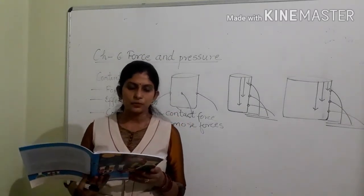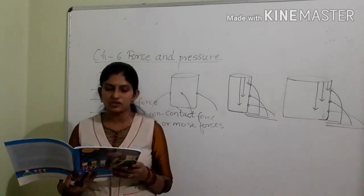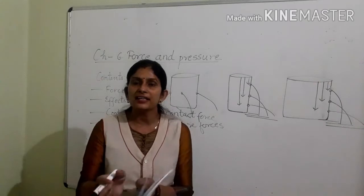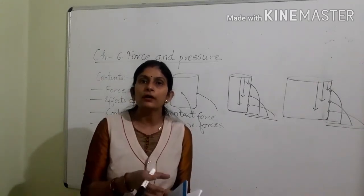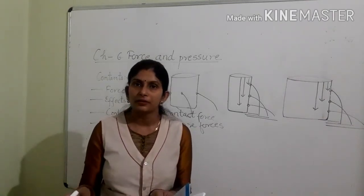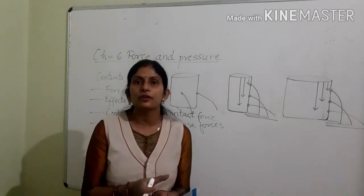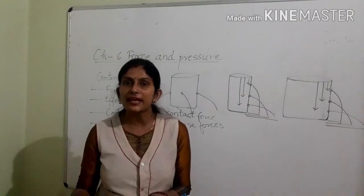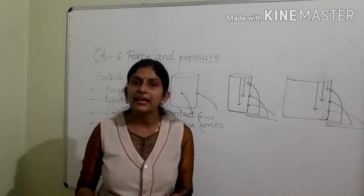Question number five, explain how objects acquire positive or negative charges. When two objects are rubbed against each other, electrons from one object get transferred to another. The object which loses electrons gets positively charged, and the object which gains electrons gets negatively charged.